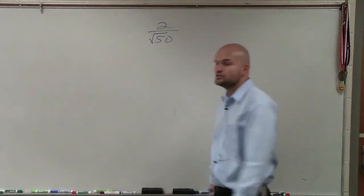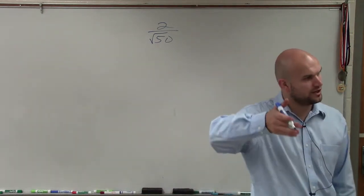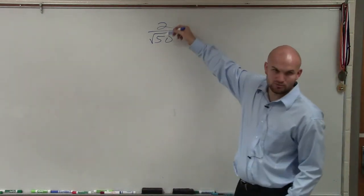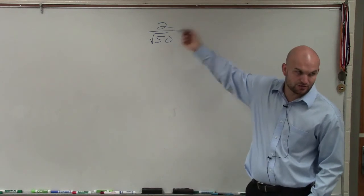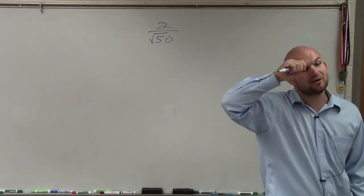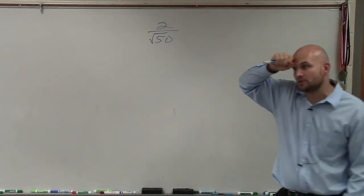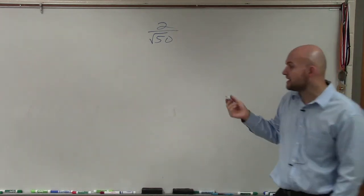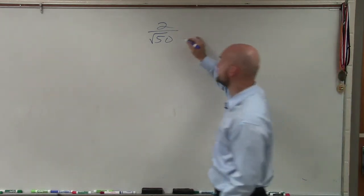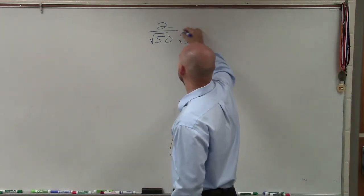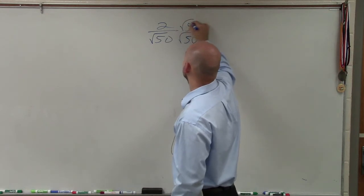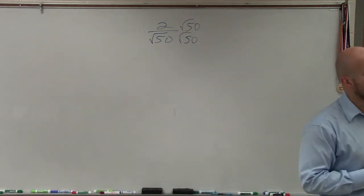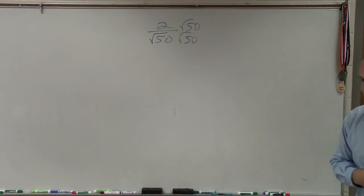So instead of dividing a rational number by an irrational number — 2 divided by an irrational — what we want to do is eliminate the irrational number from the denominator. To do that, I want to get rid of the square root of 50 by multiplying by the square root of 50 on the top and the bottom. This is what we call rationalizing the denominator.